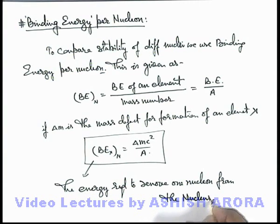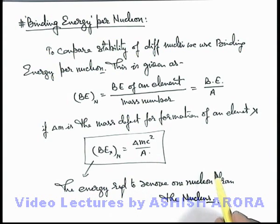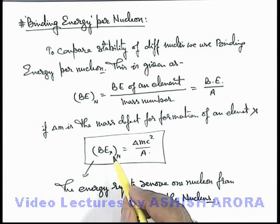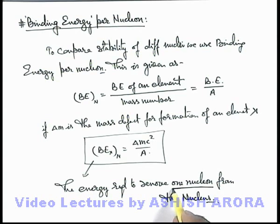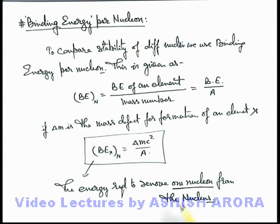So for two elements, if the binding energy per nucleon is different, the one which is having more binding energy per nucleon will be more stable relatively, because this is the amount of energy which is required to remove one nucleon from the nucleus. In the next section we'll study about the comparison of two element nuclei stability based on this parameter.